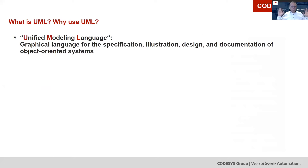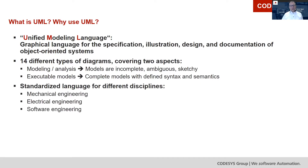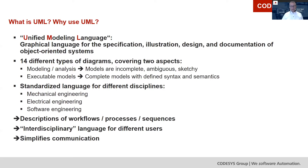Some of you might say this doesn't concern you because you're not working with object-oriented systems. However, wait a minute — it could be interesting for you too. In UML, there are 14 different graphical languages defined for modeling analysis or executable models. These 14 diagram types can serve as an intermediate language, since all engineering disciplines — mechanical, electrical, or software engineering — are familiar with these modeling languages. Therefore, this is perfect for describing workflows, processes, and sequences, acting as an interdisciplinary language that simplifies communication between different users.